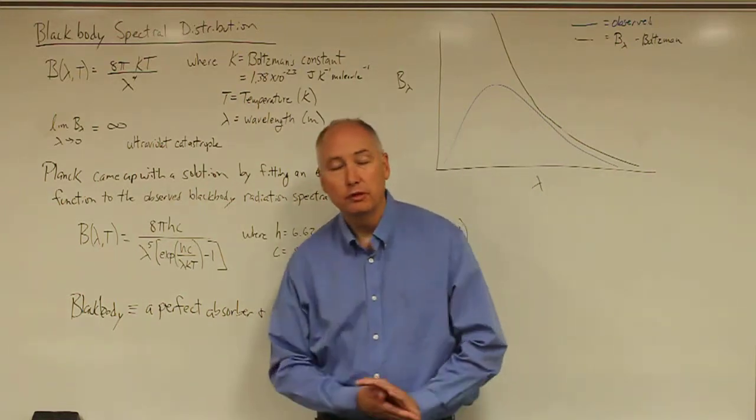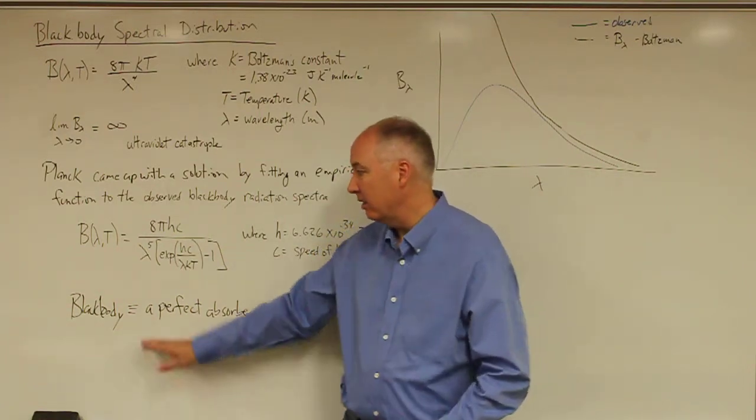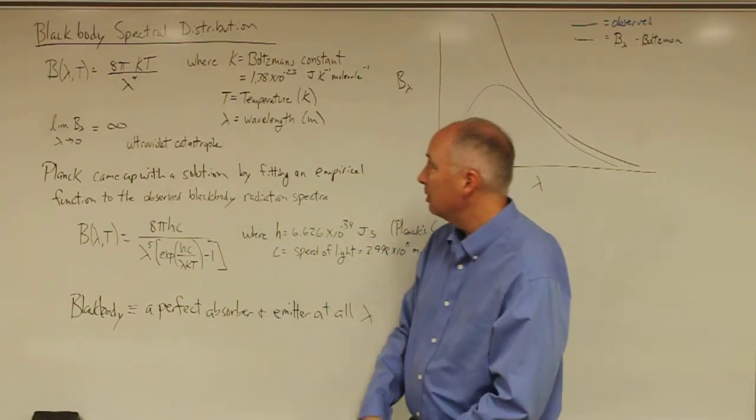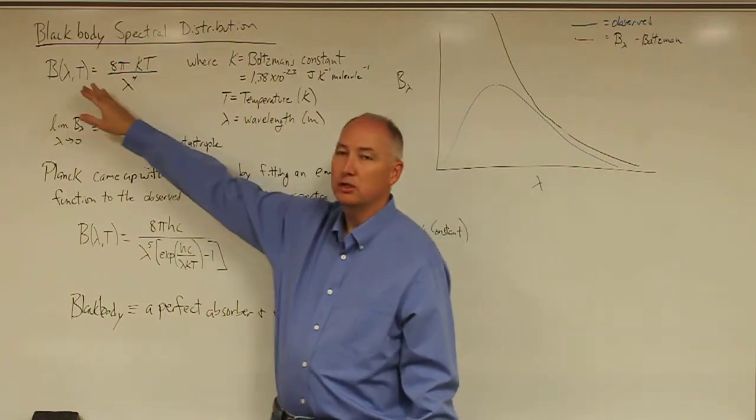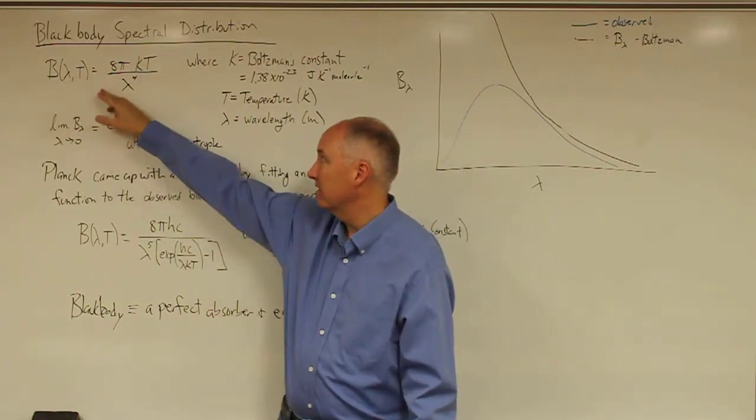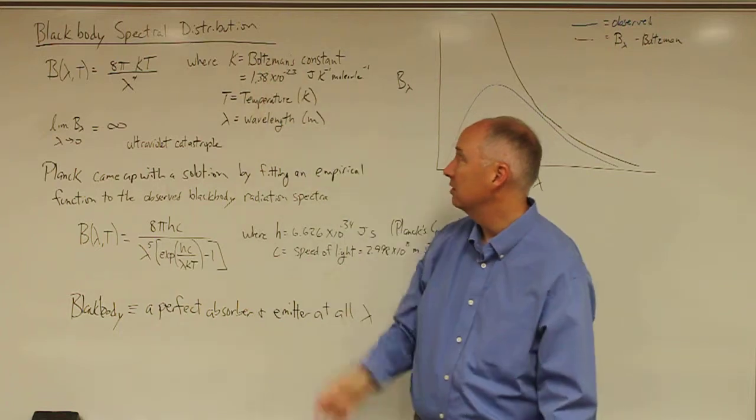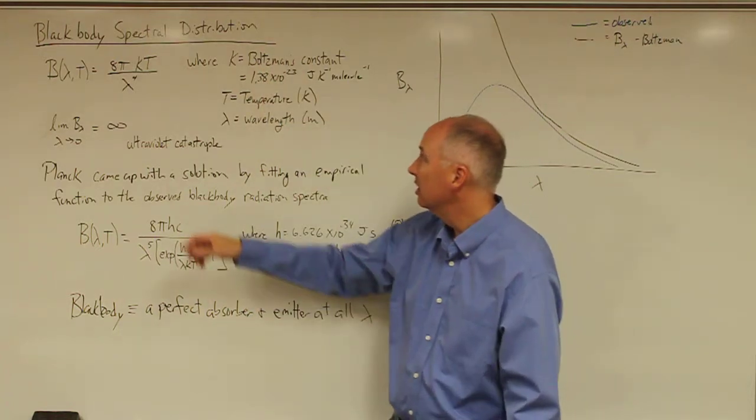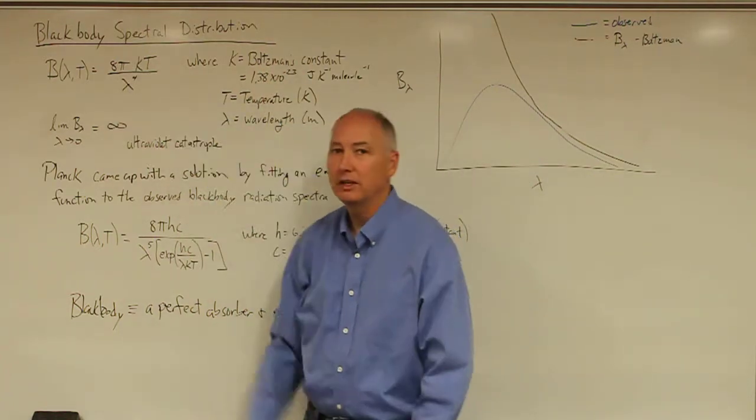The formulation that we're talking about here is for a theoretical blackbody object. Boltzmann came up with a distribution for the blackbody radiation as 8π times a constant, which he named as Boltzmann's constant, times temperature over wavelength to the fourth.